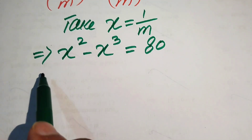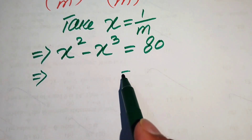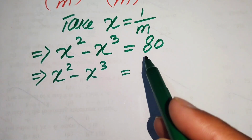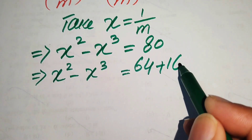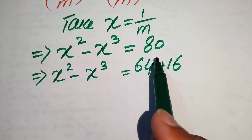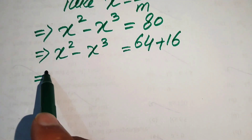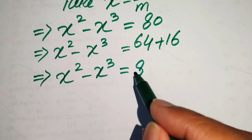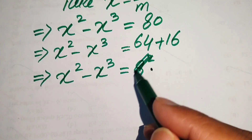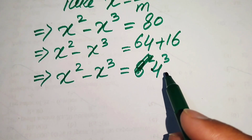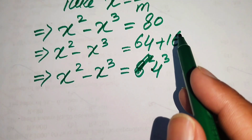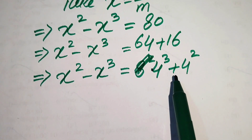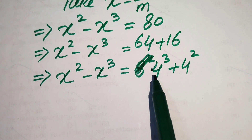To solve this equation, we focus on the right-hand side. The left-hand side has one square term and one cubic term. We write 80 as 64 plus 16, since 64 plus 16 equals 80. We rewrite the right-hand side: 64 is 4 cubed and 16 is 4 squared. Since we want both bases the same, we choose 4 cubed and 4 squared.